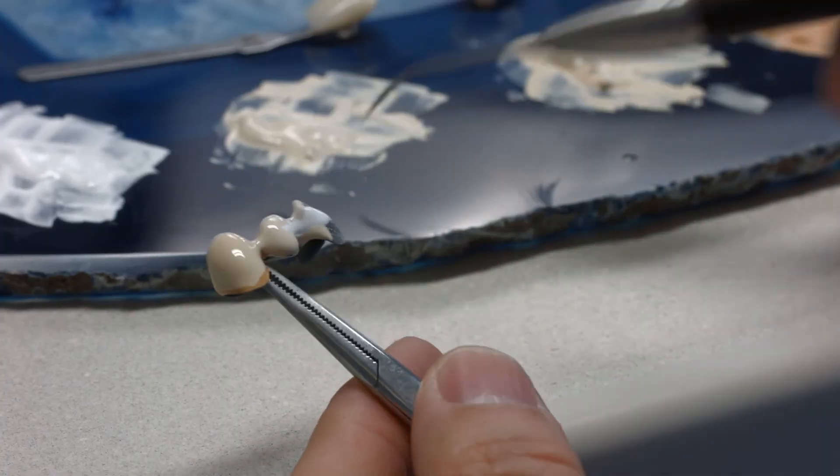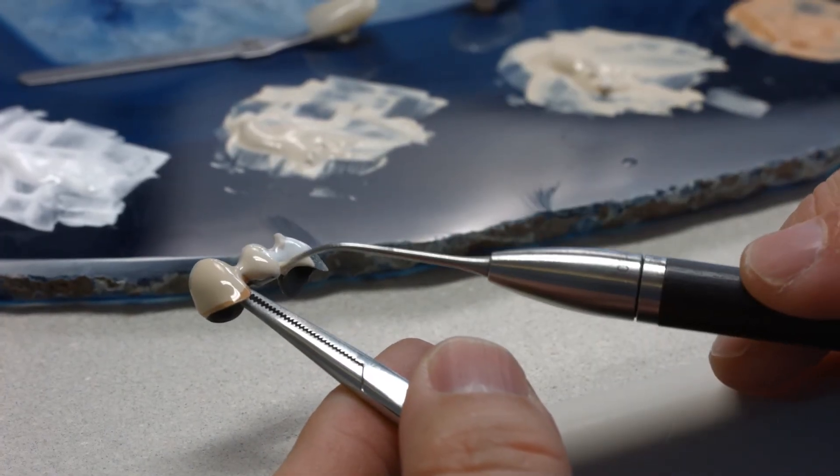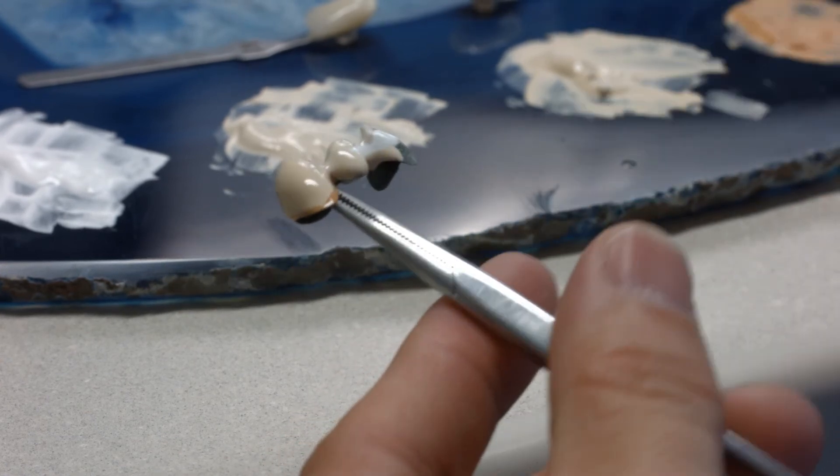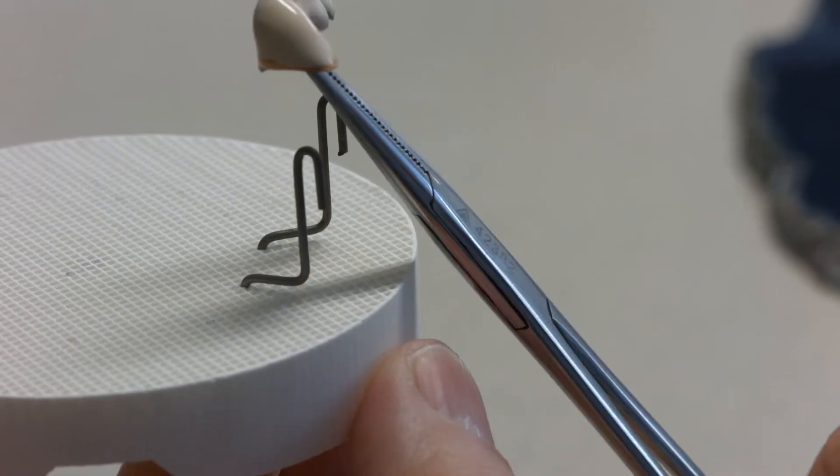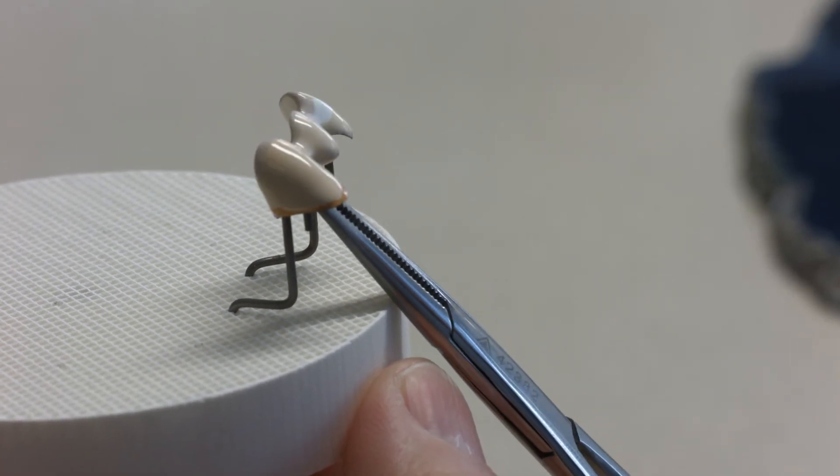If required, you can modify the colour intensity of the IPS-style powder opaquer with the IPS-style Intensive Powder Opaquer. The restoration is now ready for the second opaquer firing.